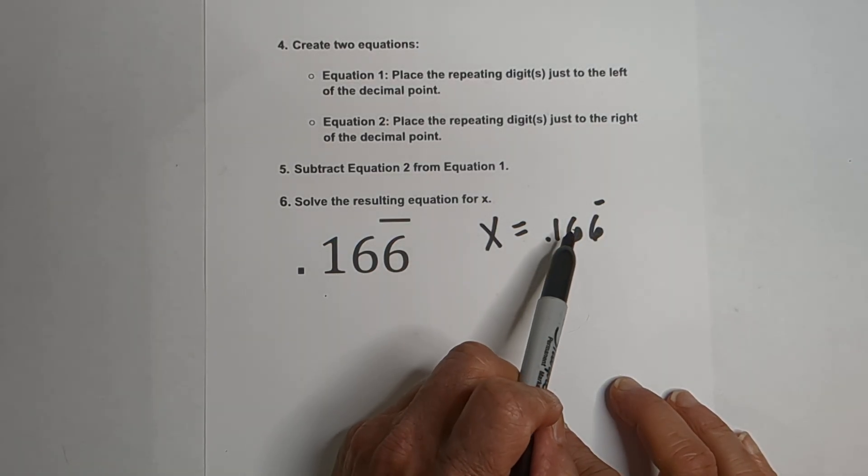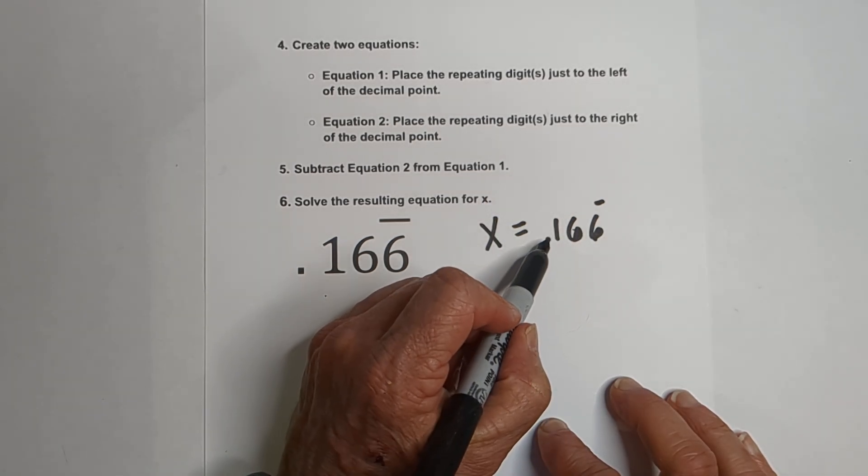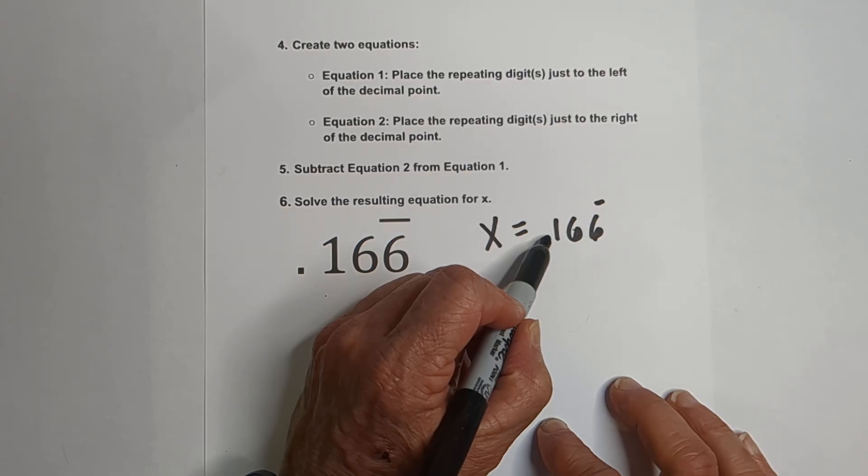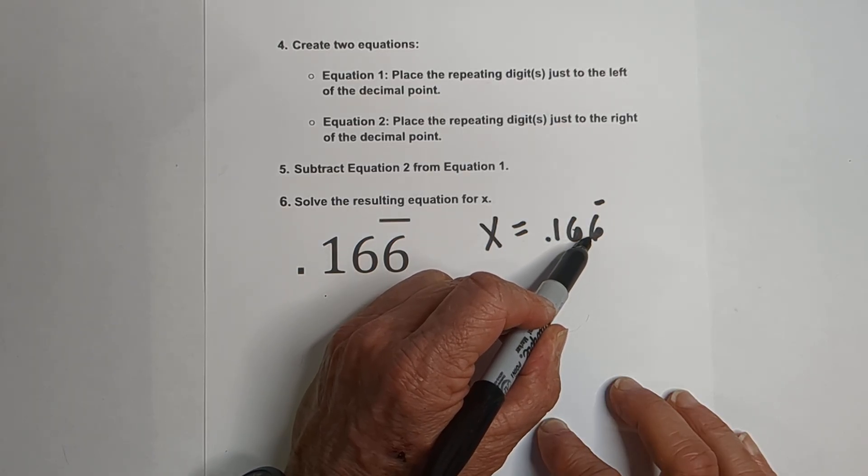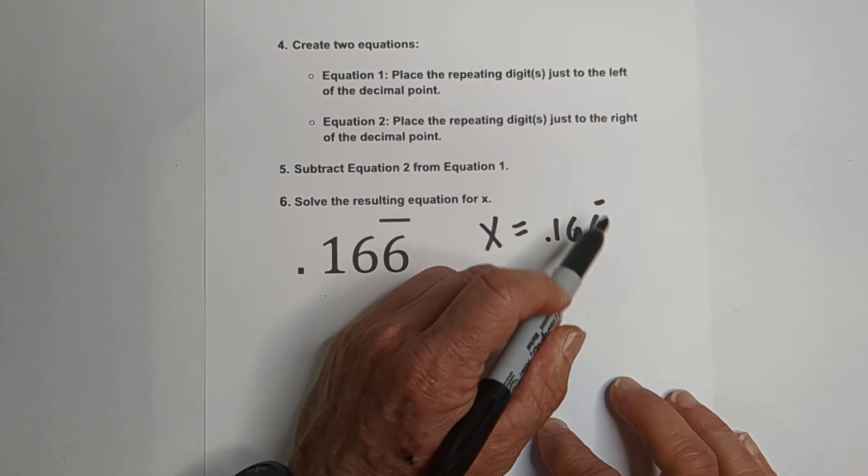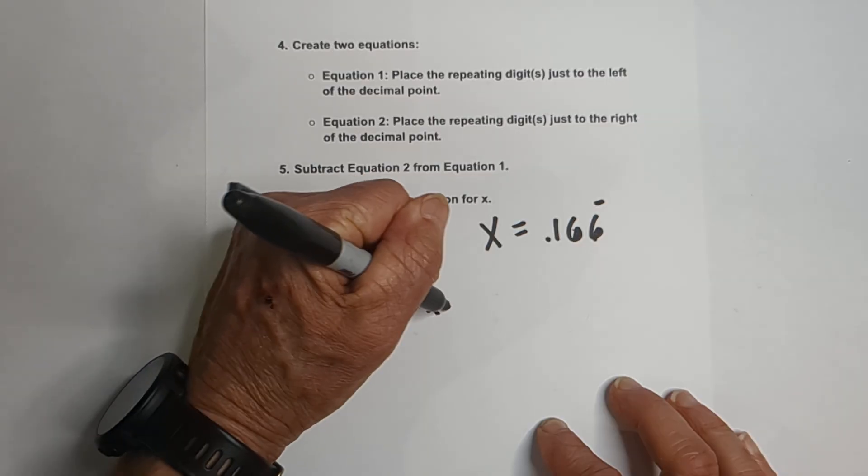Equation 1, we need the 6, which is the repeating digit, just to the left. And we can do this by multiplying by 100 because it will move the decimal 1, 2 to right here. And what you do to the right, you need to do to the left.